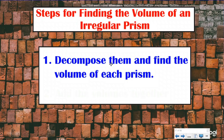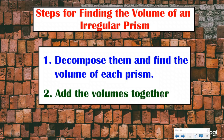First, we're going to decompose the prisms — I'm going to use my highlighter, you could break them apart using a pencil, make those lines nice and dark. Then you're going to find the volume of each prism and add the volumes together. Yesterday we had the option of counting cubes, but today there are no cubes to count, so we're going to have to use our volume formula for each prism before we add them together.